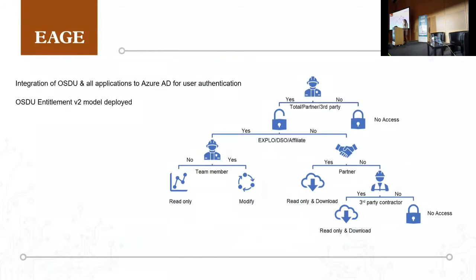Also it was a question about the entitlement model to put on top of the OSDU data platform, and this was successfully done. We deployed the OSDU entitlement v2 model — you can see the schema here — with access granted to third parties, our partners, government, to exploration or development team members, as owners or viewers, according to the entitlement model proposed.